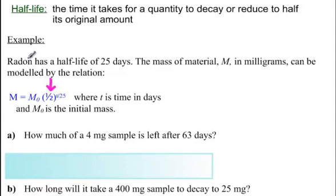Now, it says radon. Now, we're getting to a more serious type of thing other than dog poo. Radon has a half-life of 25 days. The mass of material, M milligrams, can be modeled by the relation. Here it is. T is the time in days. And M0 is the initial mass. So, once again, we have an exponent up here. That's because this number is not nice and clean like one year or one day at a time. We're talking 25 days here it takes for something to reduce to half of what it originally was.